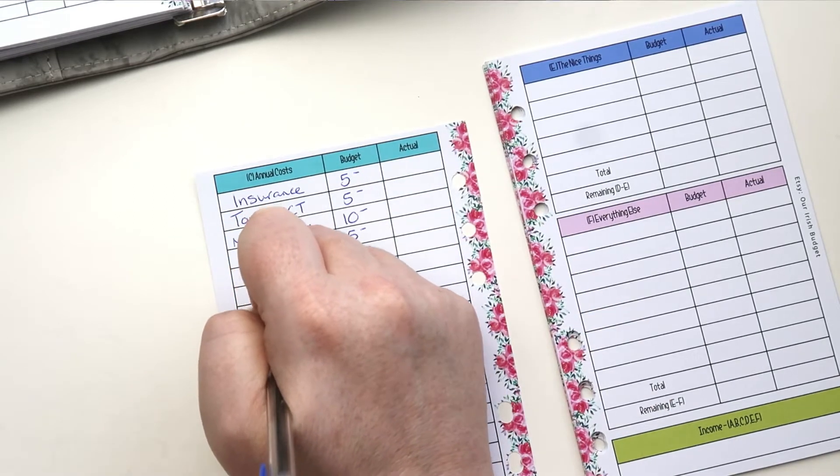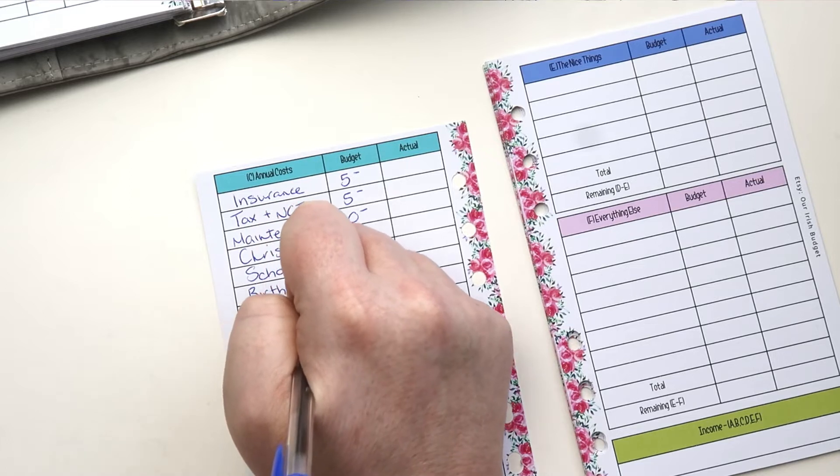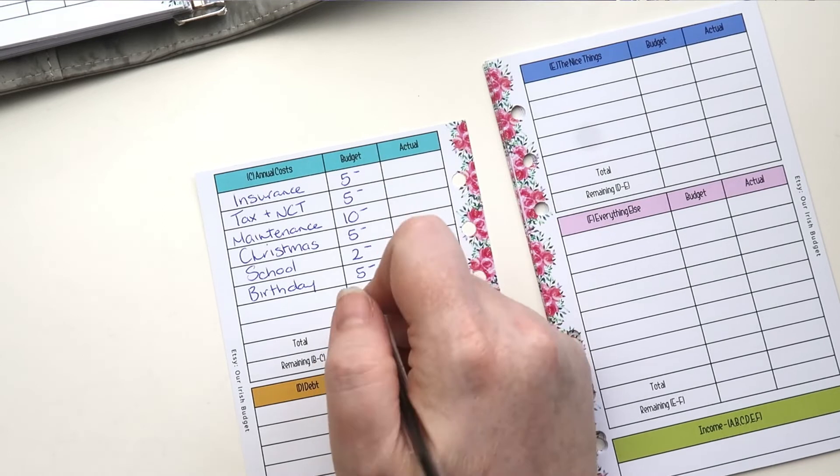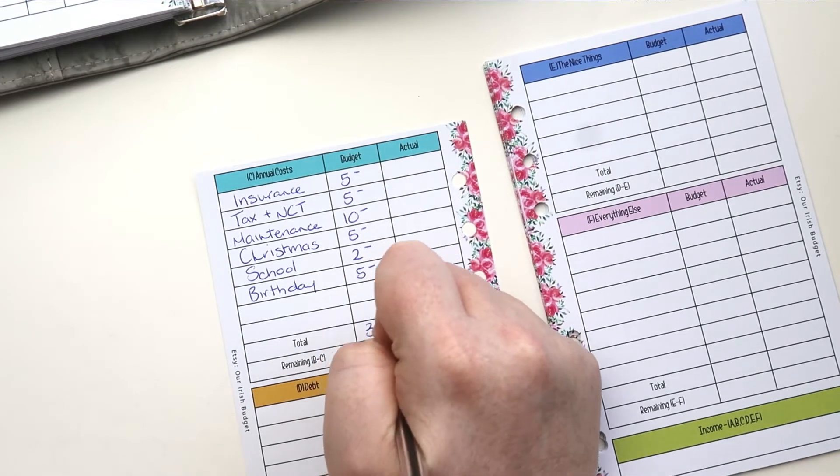And then birthdays and gifts. We're just going to top that up with five euros. So when you add them all together, you get 32 euros.